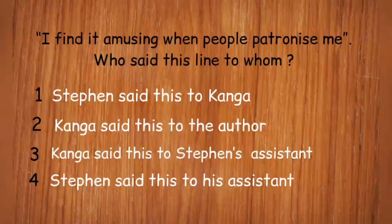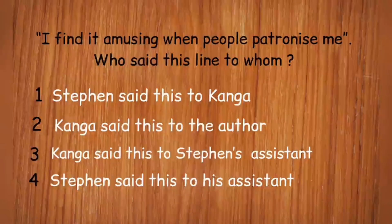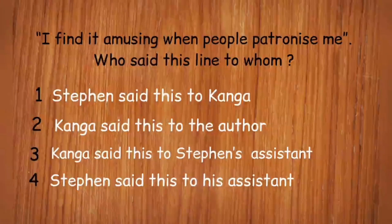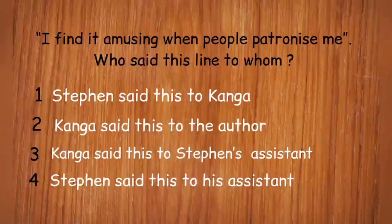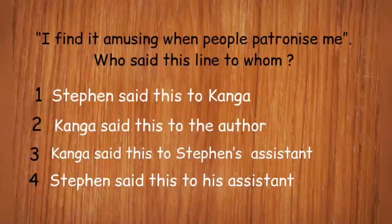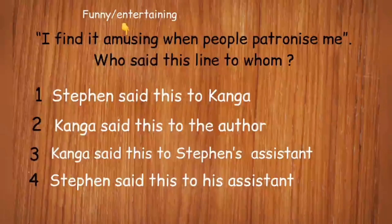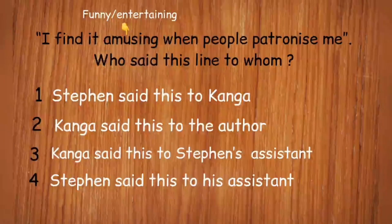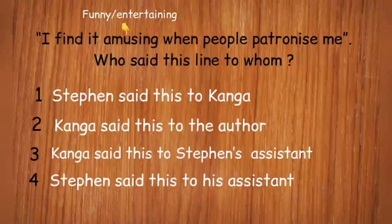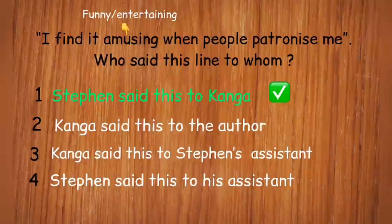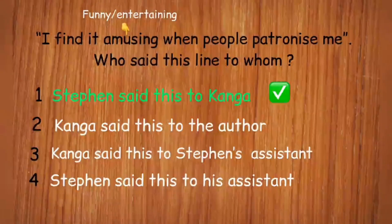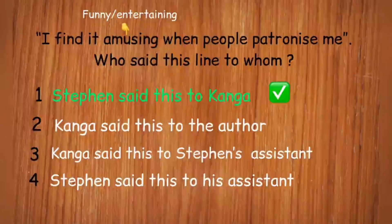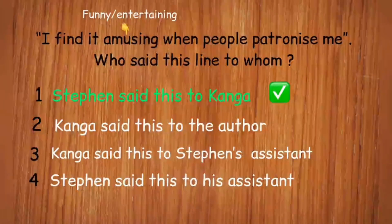'I find it amusing when people patronize me.' Who said this line, and to whom? Stephen said this to Kanga. Amusing means funny or entertaining. Patronize means when people treat you with kindness but at the same time make you feel inferior to others. Stephen said this to Kanga, meaning he finds it funny when people show kindness to him but make him feel inferior based on his disability. The correct answer is option one.